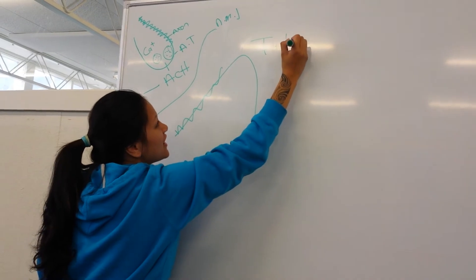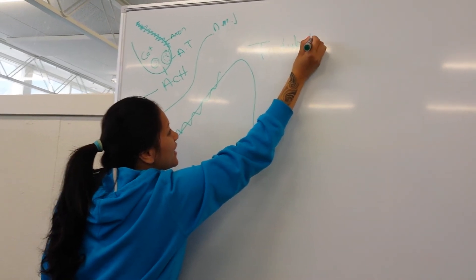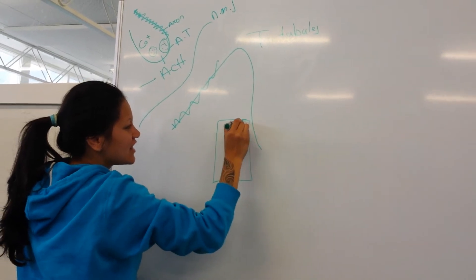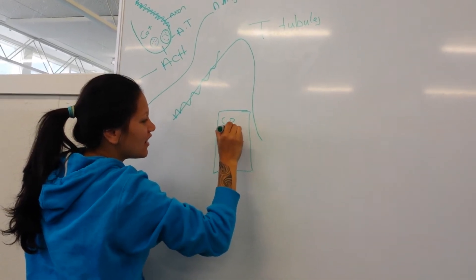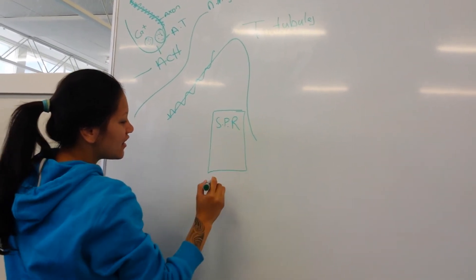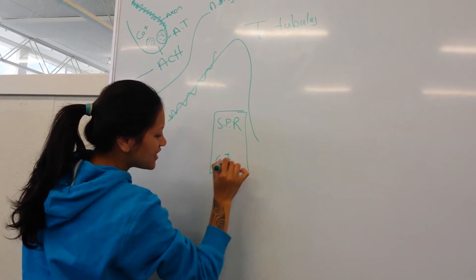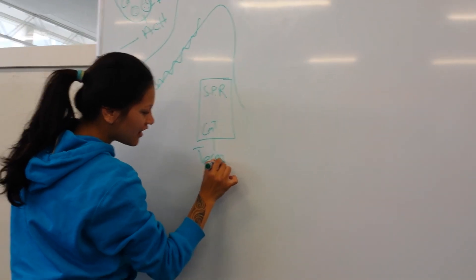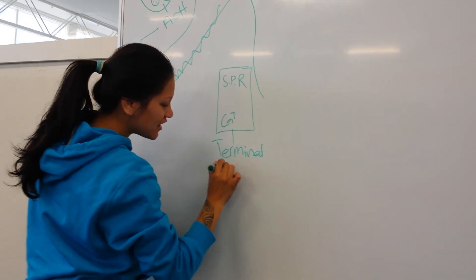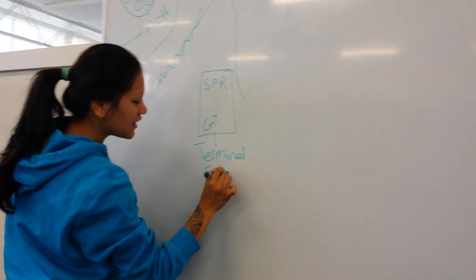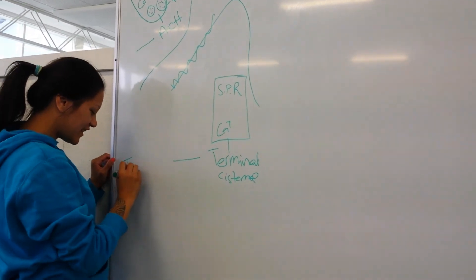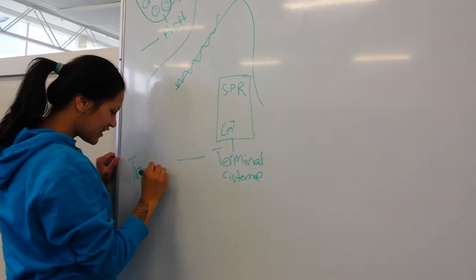The t-tubules stimulate the sarcoplasmic reticulum to release calcium from the terminal cisternae. Calcium then binds to the troponin.